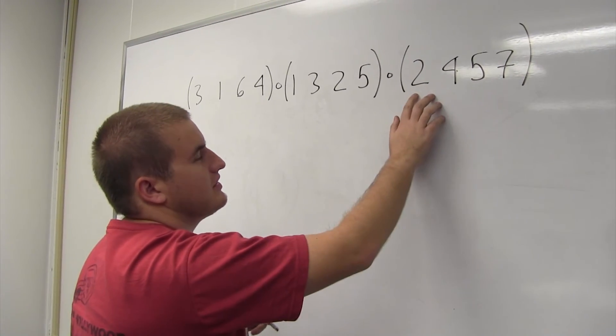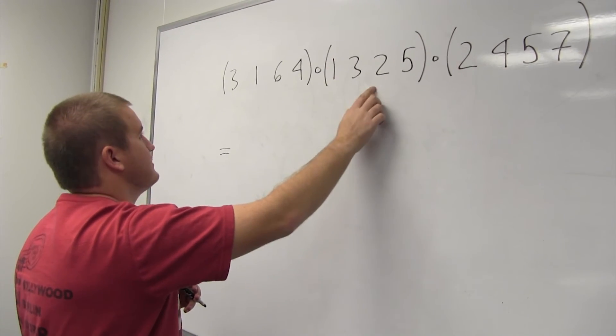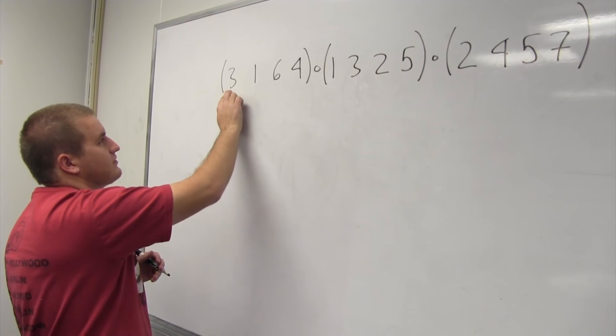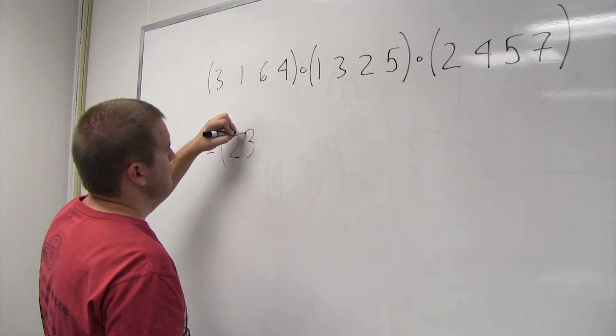And then the 2 goes to the 4 here, and then it's fixed here, because the 4 doesn't appear. And then the 4 goes to 3. So our 2 ends up resulting in 3. So it goes from 2 to 3.